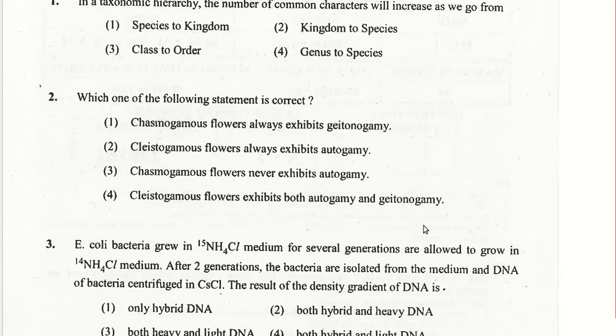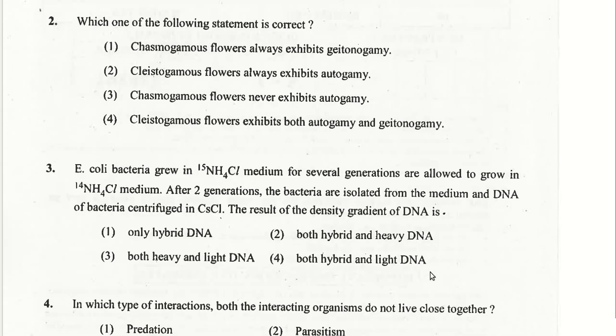E. coli bacteria growing in 15N NH4Cl medium for several generations are allowed to grow in 14N NH4Cl medium. After two generations, the bacteria are isolated and the DNA centrifuged in cesium chloride. The result of the density gradient shows both hybrid and light DNA.